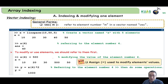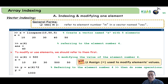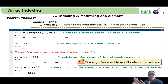You can also use an indexed element in operations. For example, if we already changed x(4) to 500, then y = x(4) * 2 gives y = 1000. Just refer to the element by its index to use it in any operation or function.